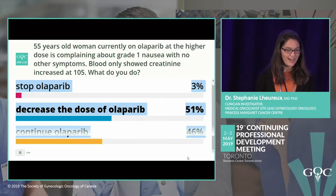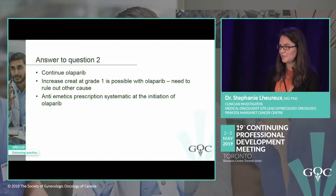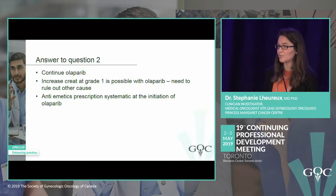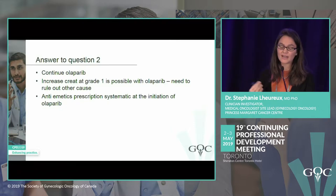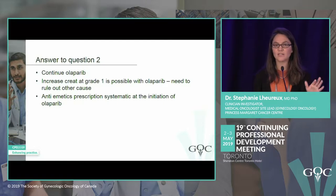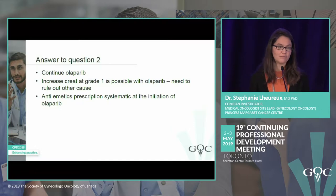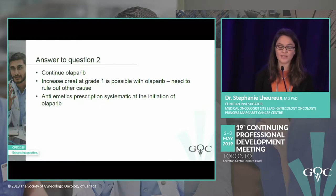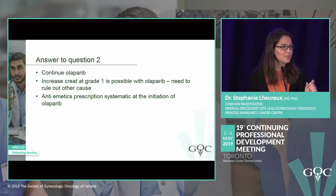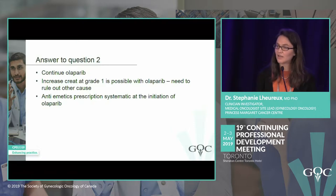The answer is to continue olaparib. An increased creatinine — typically around 110 to 1.5 times normal — is frequently seen with olaparib and is usually not very toxic. We should ensure there's no other cause for the creatinine rise, but it can be expected. For grade 1 nausea, prescribing anti-nausea medication is sufficient; nausea usually appears in the first two months and settles over time. Asking patients to take tablets with a small snack can also help.